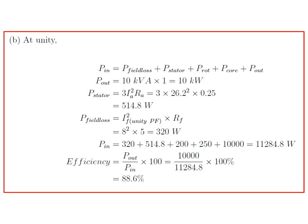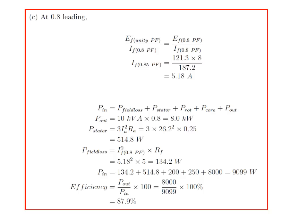At unity power factor, following the same equations, the efficiency is 88.6%. If the system operates at 0.8 power factor leading, we find the field current using the same linear ratio with field voltage. Given that field current, we calculate the input power and output power.